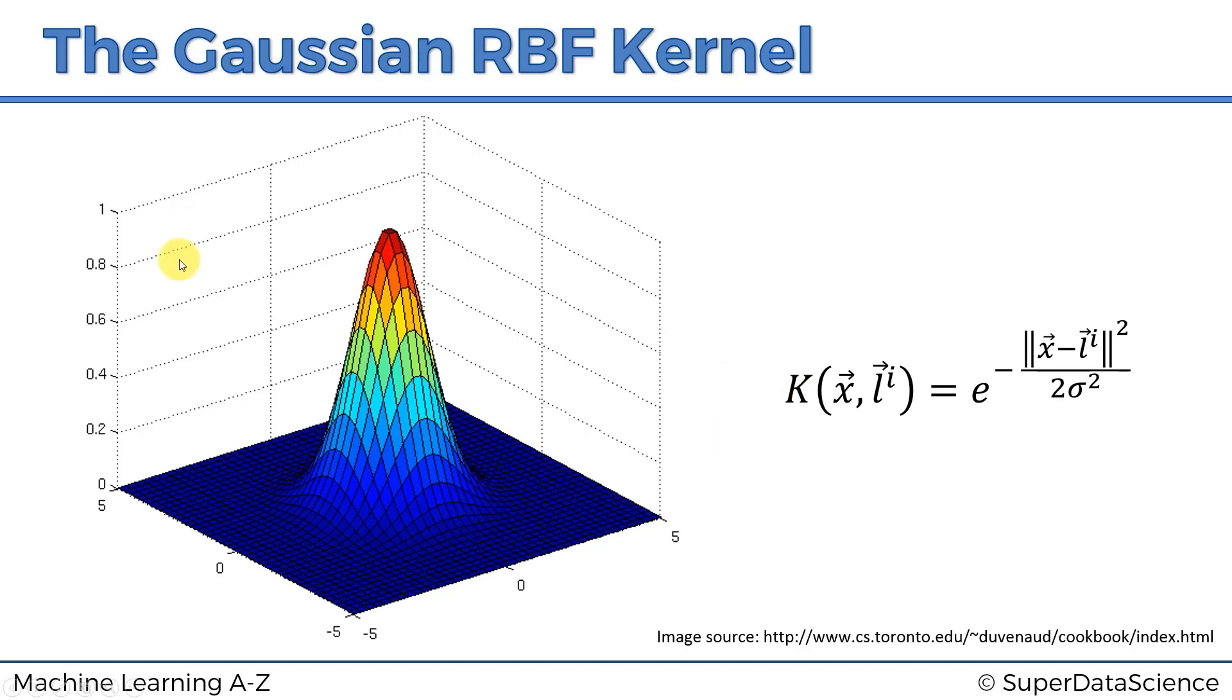The vertical axis represents the result that we get when we calculate this for every other point on this xy plane. If we take any other point, then this is the result of this calculation. Let's say we put that point in here, calculate the distance to the landmark, square it, divide by 2σ² where sigma is some fixed parameter that we decided upon earlier, then take the negative of that and put the exponent to that power. Then we get this result.